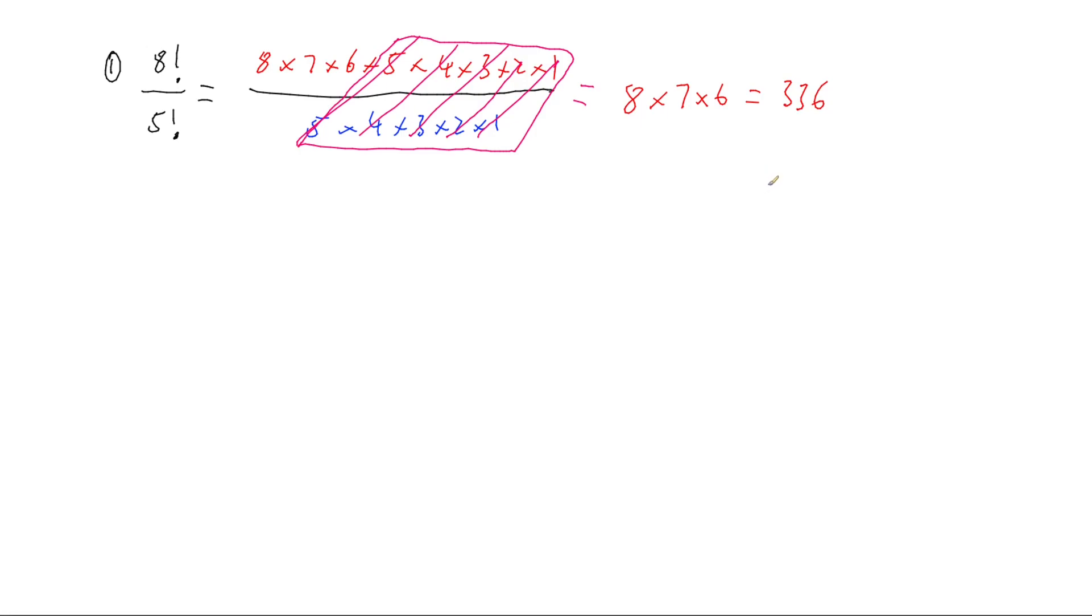So that wasn't too difficult to work out. So if we've got two factorials dividing, the smaller one will cancel out a lot of the remaining one.